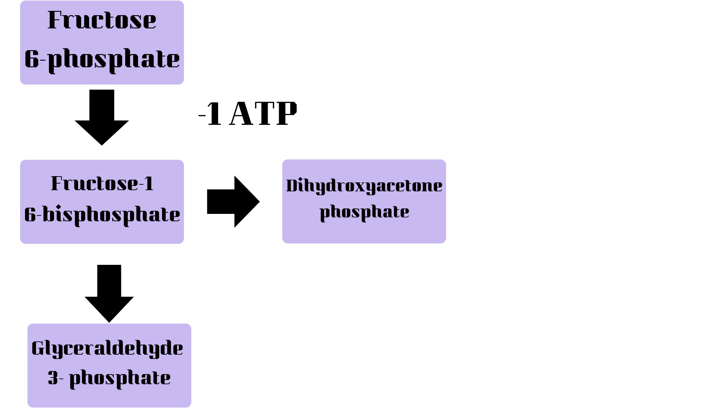However, because glyceraldehyde-3-phosphate is used in further reactions, usually dihydroxyacetone phosphate is converted into glyceraldehyde-3-phosphate instead of the other way around.